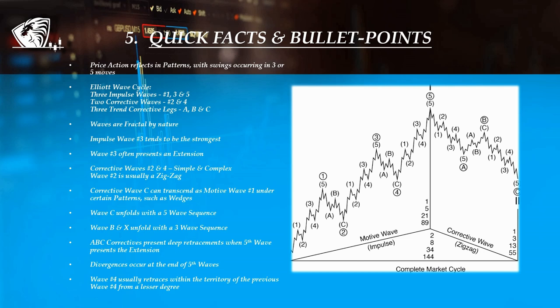Most of the time, impulse 3 contains an extension, which would imply impulse 5 to have the same length as impulse 1.